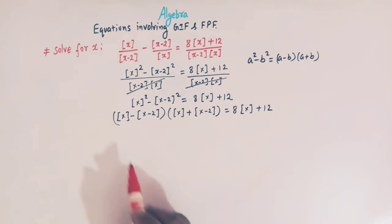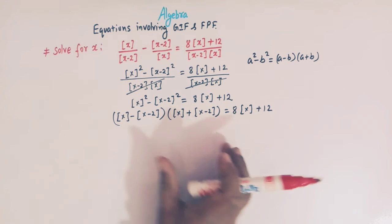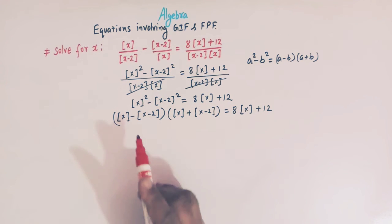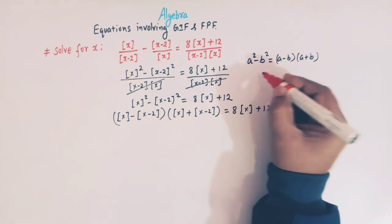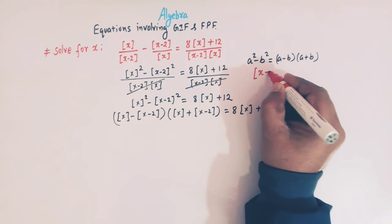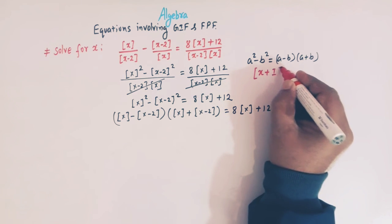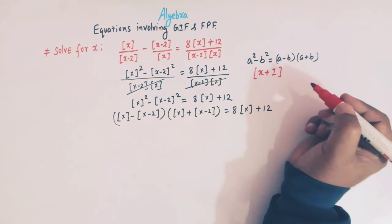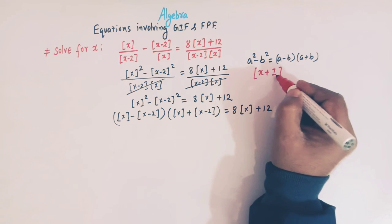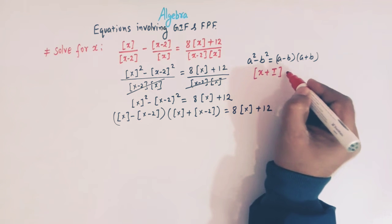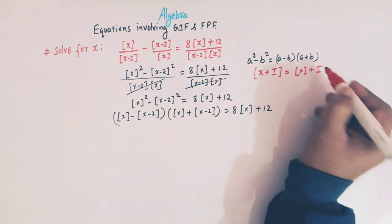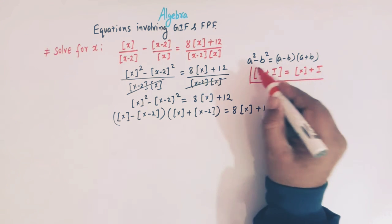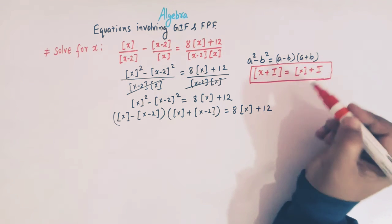To simplify further, we use an important property of the greatest integer function: if i denotes some integer, then the greatest integer of (x plus i) can be written as greatest integer of x plus i. This is a key property of the greatest integer function.